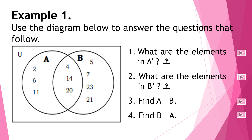Let's have example number 1. Use the diagram below to answer the questions that follow. We have a given Venn diagram with two sets inside the universal set: set A and set B. The elements of A are 2, 4, 6, 14, 11, and 20. While set B has elements 4, 5, 14, 7, 20, 23, and 21. Let us now answer question number 1.